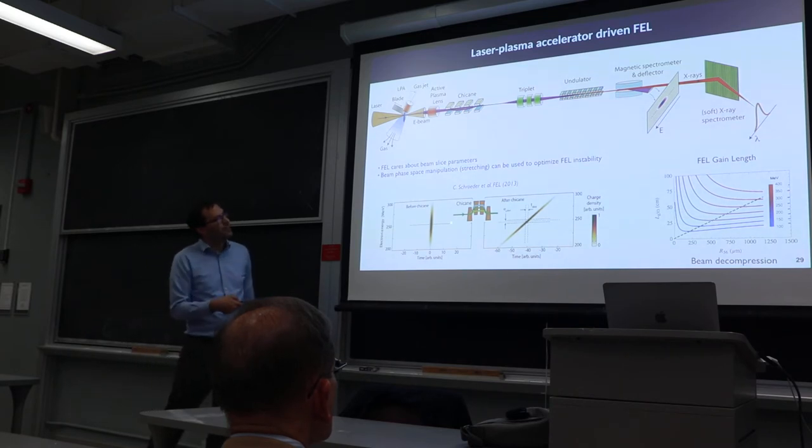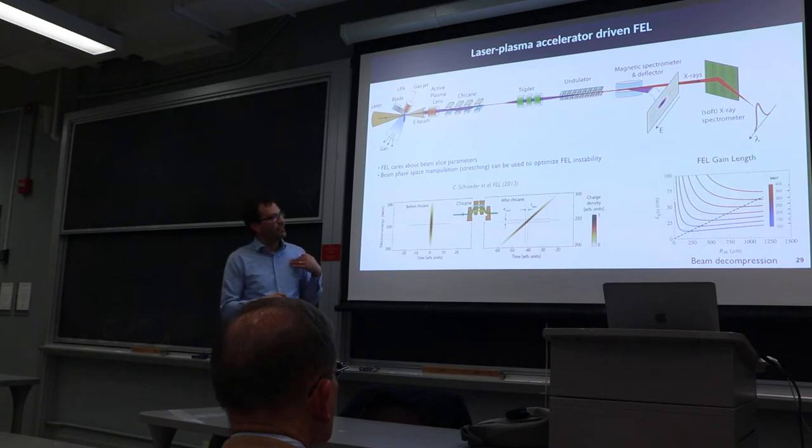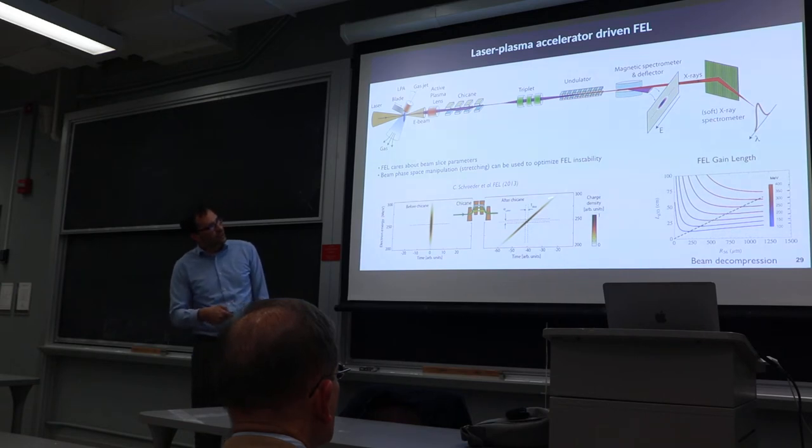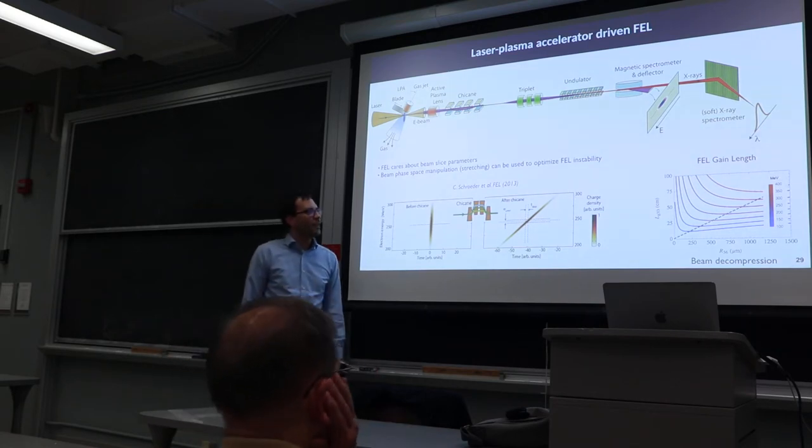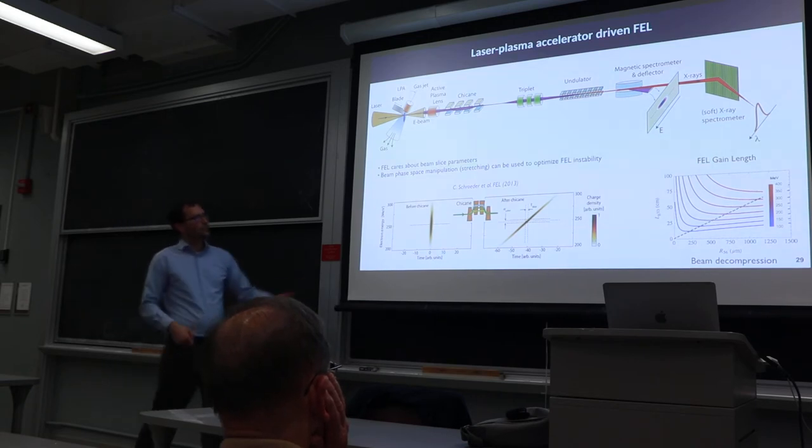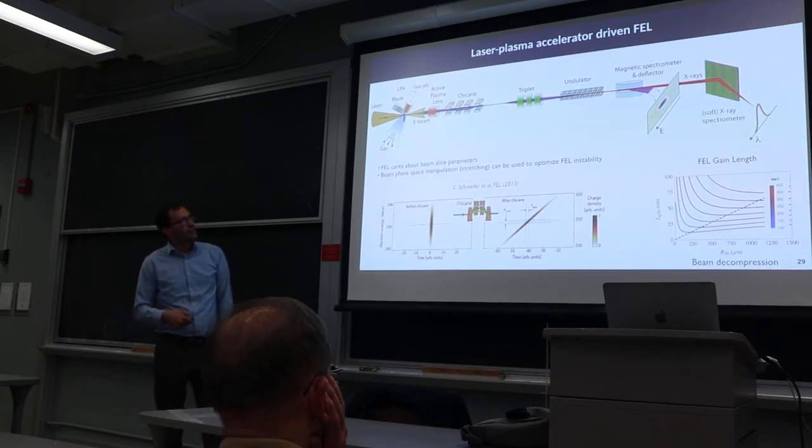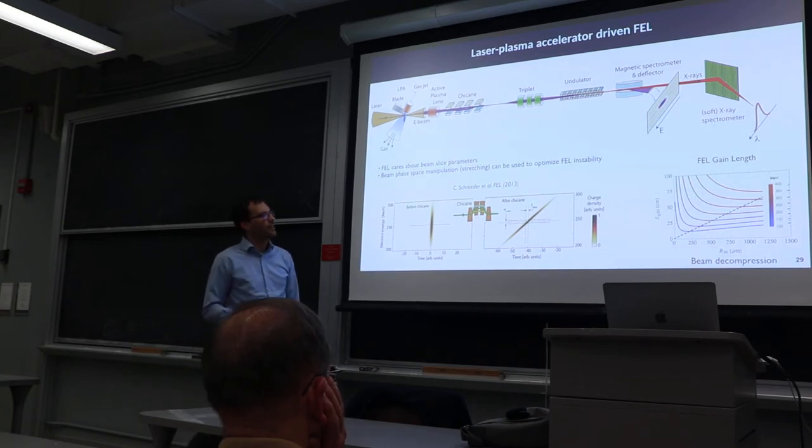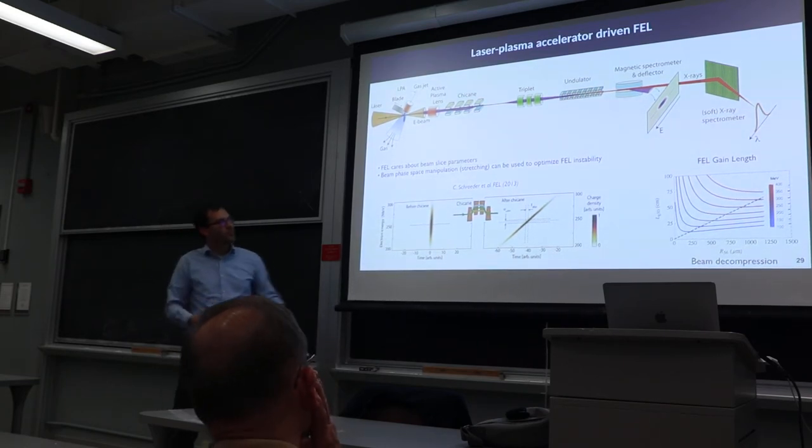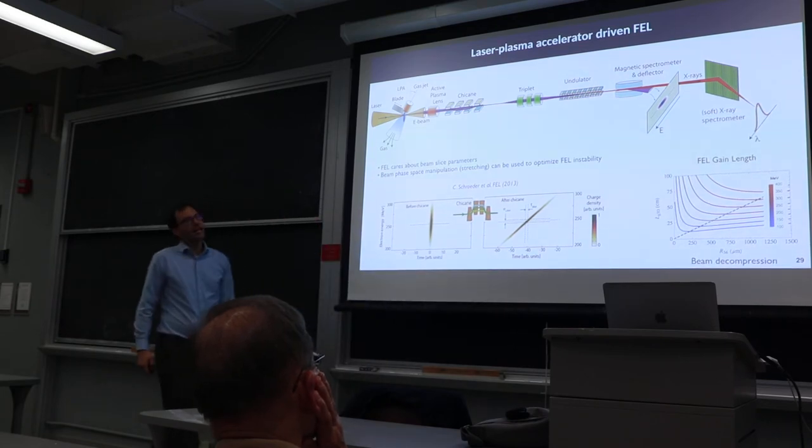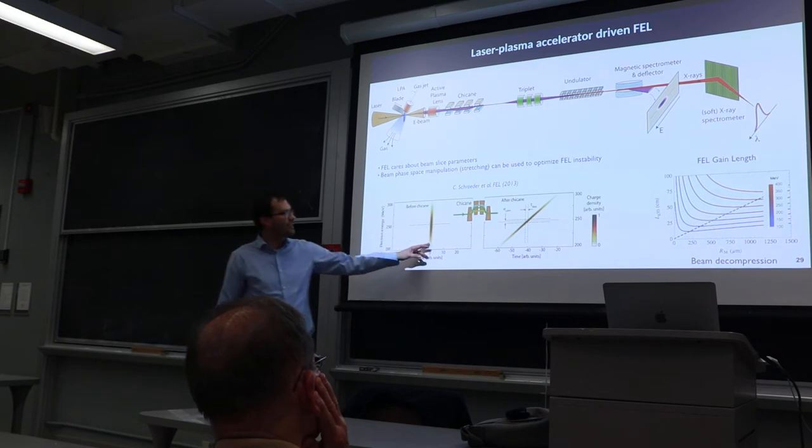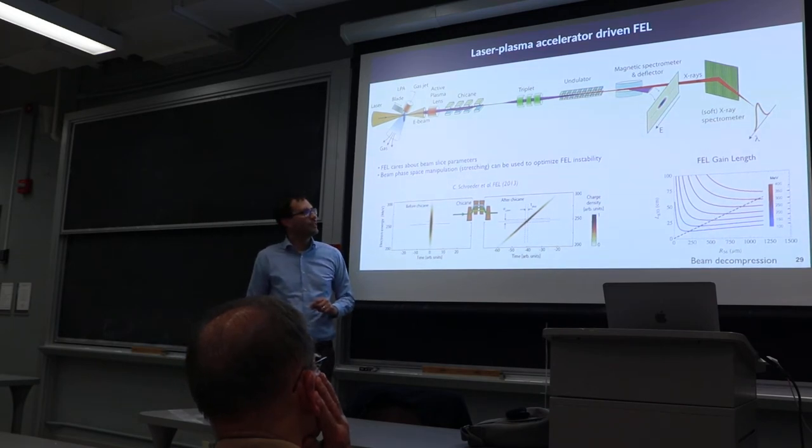A chicane is a series of magnets that bend the beam. The higher energy electrons take short paths and the lower energy electrons take long paths, so this stretches out your beam. The high energy particles are ahead and the low energy particles are behind. This reduces the energy spread in a single slice, and that's what matters for the FEL interaction. You optimize it—you're losing a little bit of peak current, but the energy spread is a larger effect than reducing the peak current, so it's a net win.